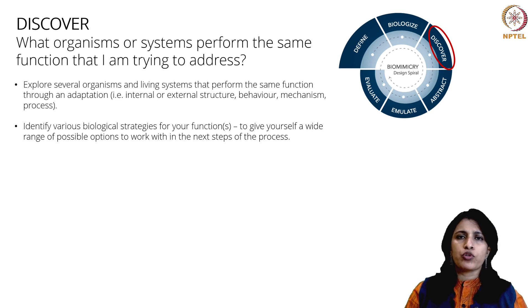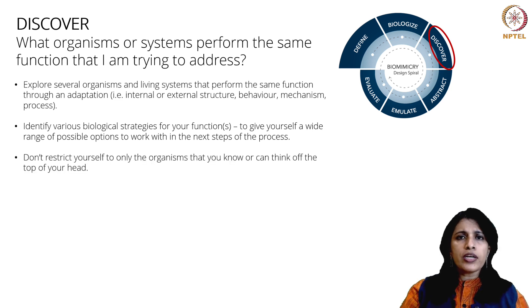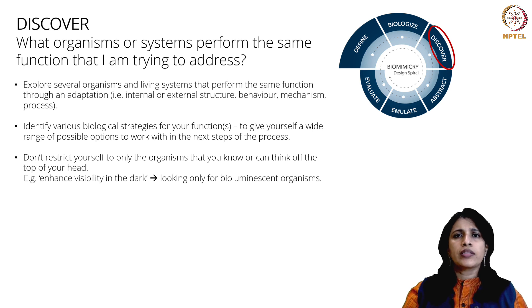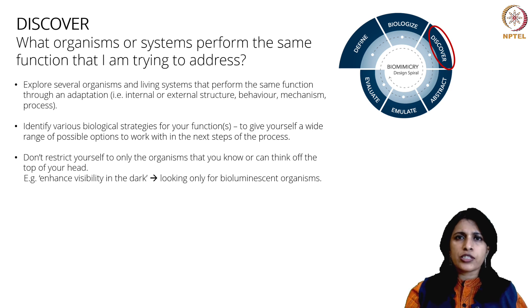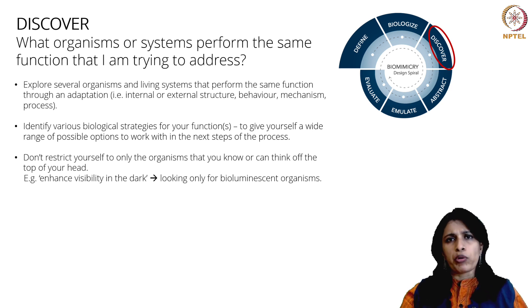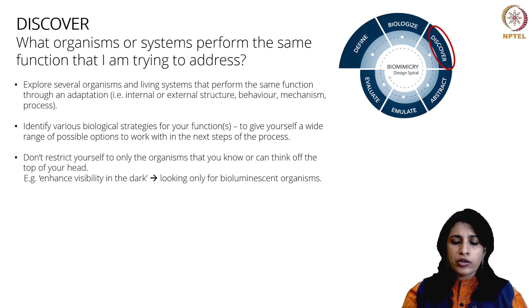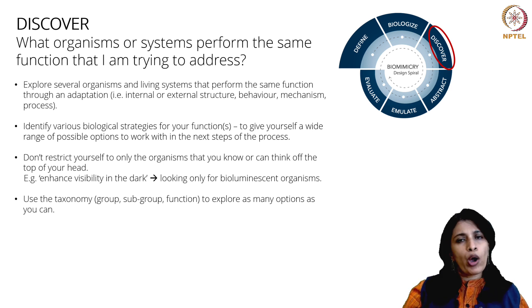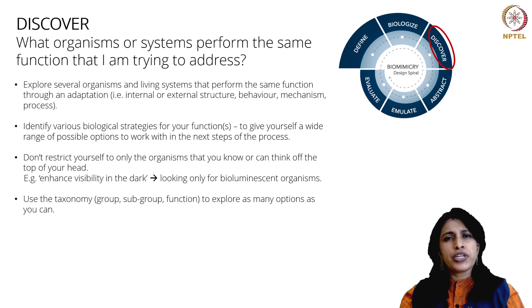Don't restrict yourself to only organisms that you already know. Some students think they already know the answer — for enhancing visibility in the dark they look only for bioluminescent organisms like fireflies. Don't do that. Go with the process. Don't just stick to what you know and what you think you know. Trust the resources available to you. Use the taxonomy fully — there are 160 specific functions you can use.